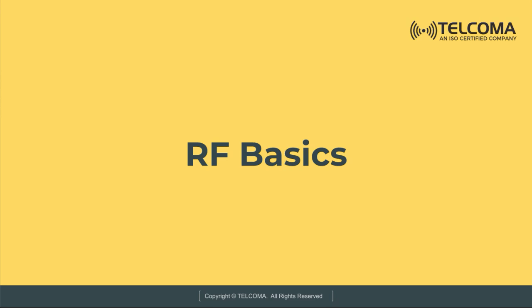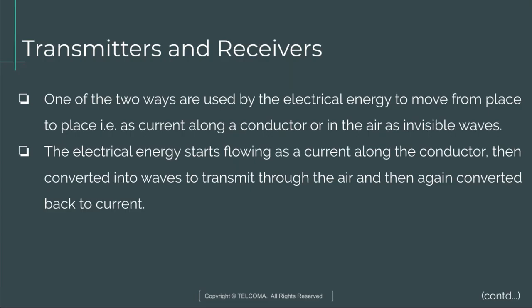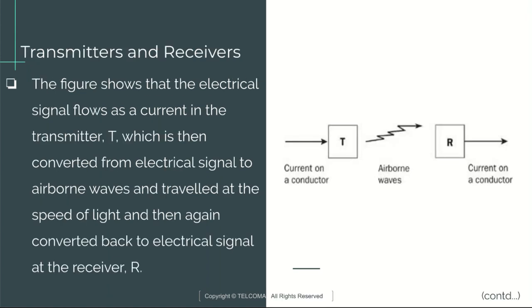The first lecture is RF basics. Starting with transmitters and receivers, electrical energy moves from one place to another in two ways: as current along a conductor, or in the air as invisible waves. The electrical energy starts flowing as current along a conductor, then is converted into waves to transmit through the air, and then converted back to current after reception.